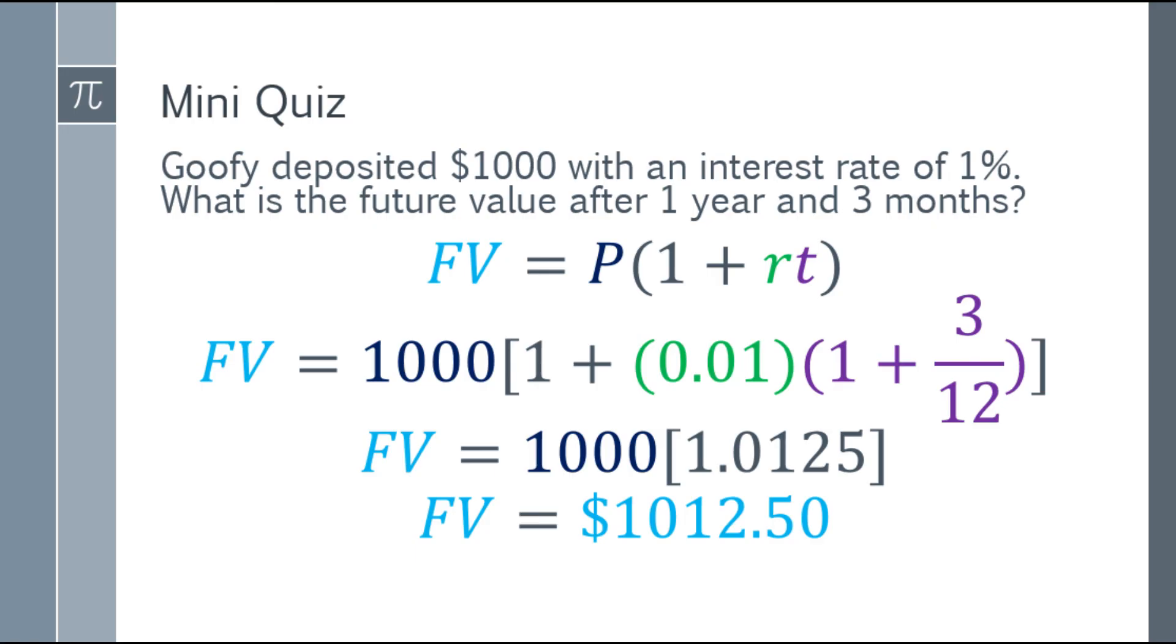So if you deposit 1,000 dollars with an interest rate of 1%, simple interest, what is the future value after 1 year and 3 months? So what you'll get is 1,012.50.